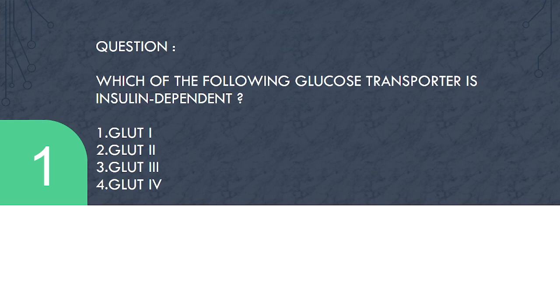The first question is, which of the following glucose transporter is insulin dependent? GLUT1, GLUT2, GLUT3, or GLUT4? The answer is GLUT4.